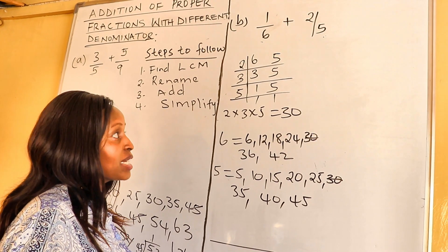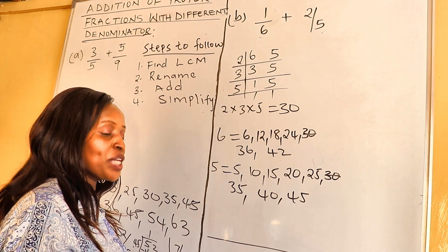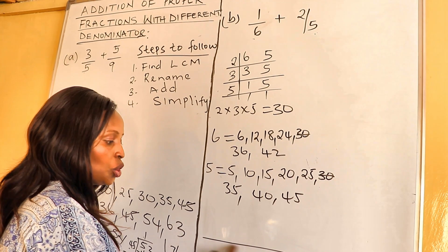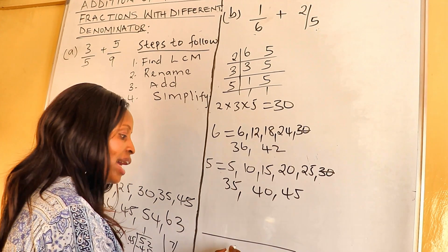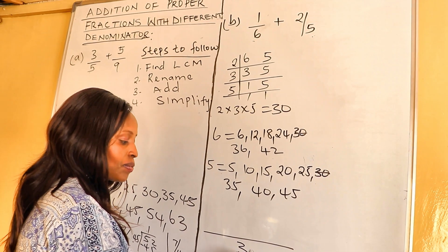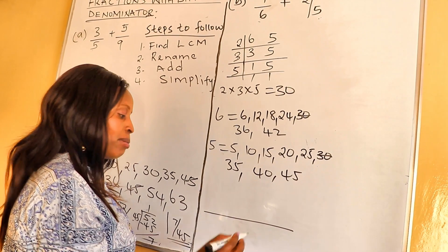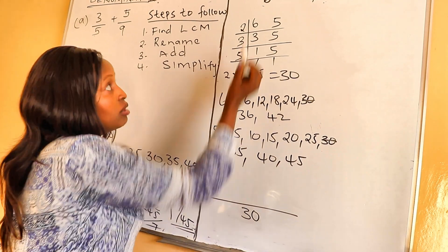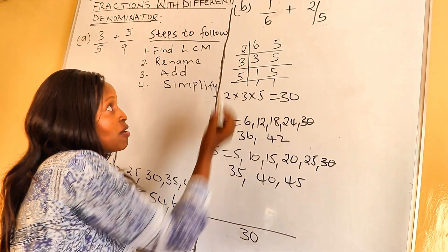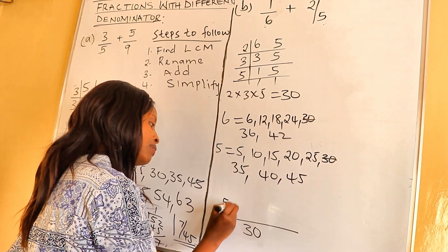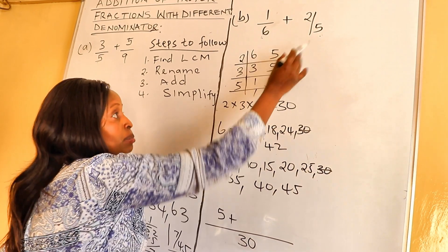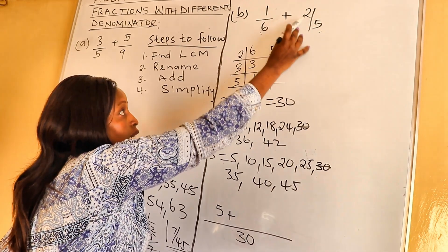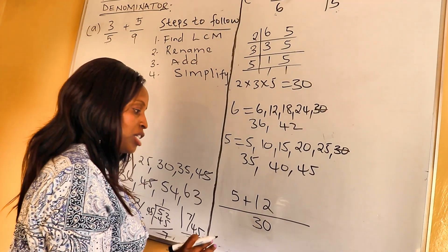Now we move on to the next step. Step 2, we are renaming the fraction. So we draw this big line there and we put our LCM under that line. So our LCM is 30. 30 divided by 6 is 5. 5 times 1 is 5. Plus 30 divided by 5 is 6. 6 times 2 is 12. Now we have renamed our fraction.